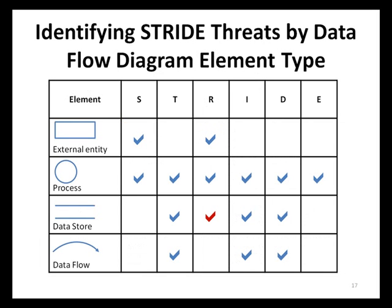The Microsoft SDL threat modeling process can be used by non-security experts to enumerate potential threats. The chart showing common STRIDE threat types by data flow diagram elements can be used as a baseline for enumerating threats. For instance, if the model contains an external entity element, then the threats of spoofing and repudiation must be considered. If the model contains a process element, then all STRIDE threats must be considered. Data stores are sometimes affected by repudiation threats, specifically whenever the data store itself is a log.